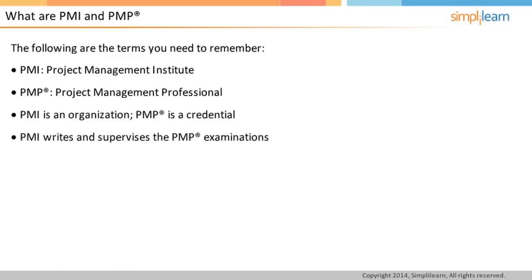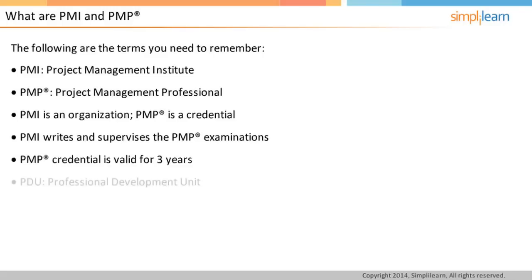If you need more information on PMI, you can visit their website, www.pmi.org. A PMP credential is valid for three years. After the completion of this three-year period, it can be renewed for another three years. PMI measures project management experience in the units of PDU.